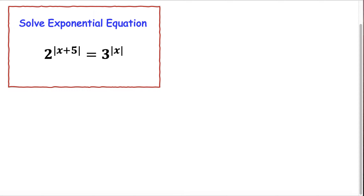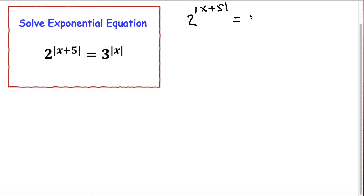So the exponential equation is 2 to the exponent with absolute value of x plus 5, is equal to 3 to the absolute value of x.